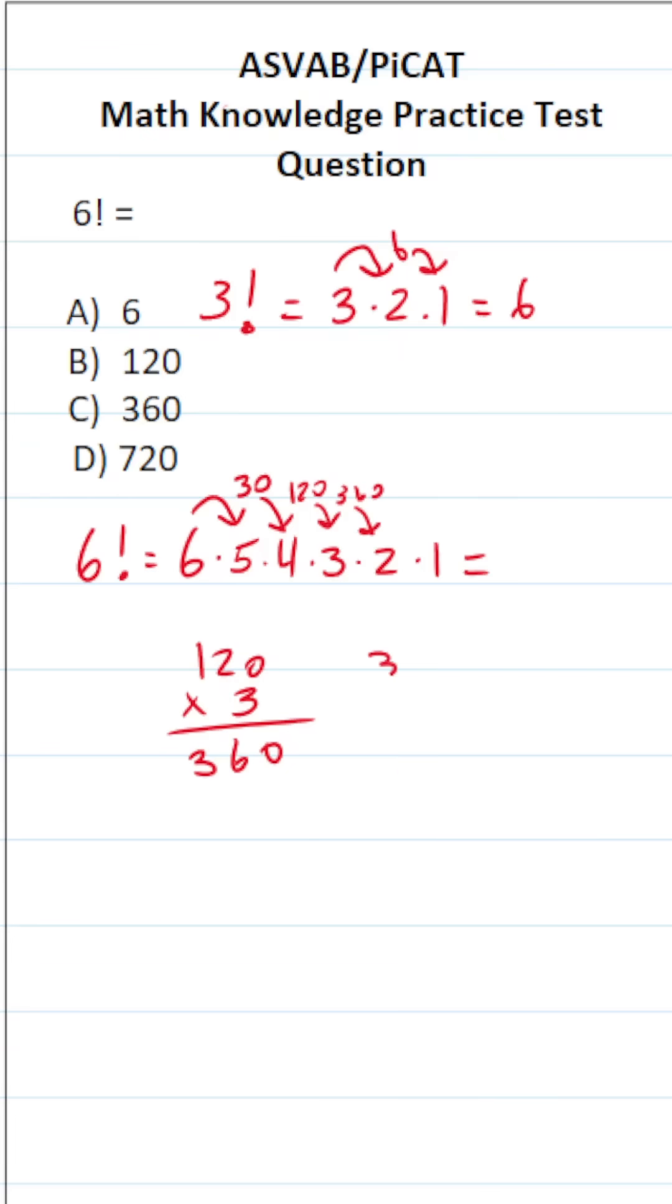360 times 2. Again, if you can't do it mentally, do it off to the side. 0 times 2 is 0. 6 times 2 is 12. Bring down a 2. Carry a 1. 2 times 3 is 6. Plus 1 is 7. So this is 720.